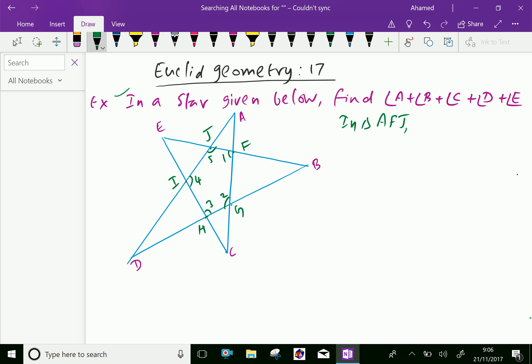Now, in triangle AFJ, the angle A plus 180 minus angle 1 plus 180 minus angle 5 equal 180. Because sum of all angles in a triangle is 180. Means this angle, this and this all together 180 degrees.